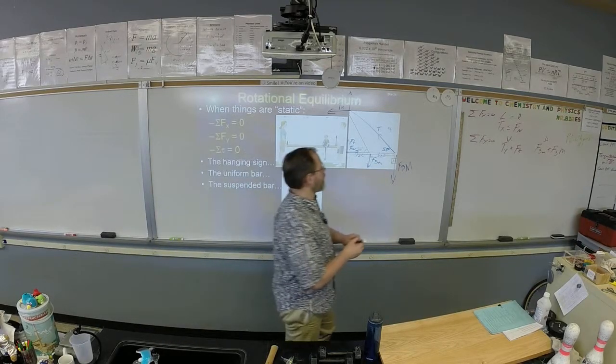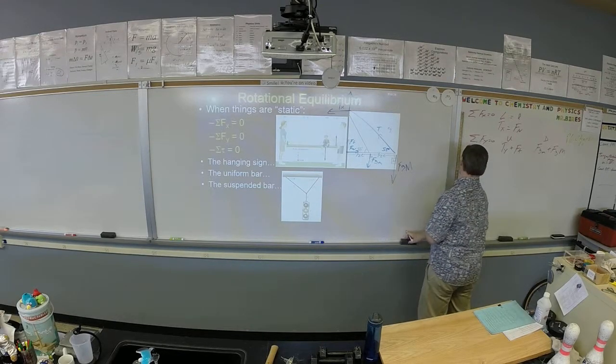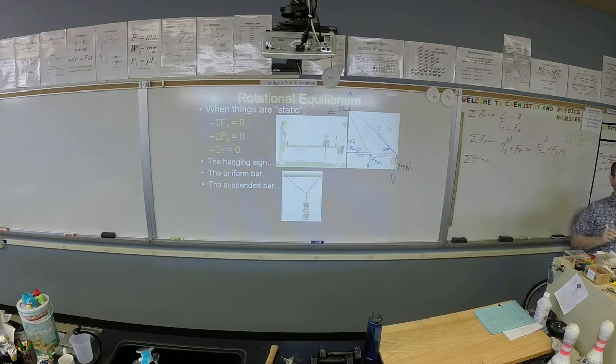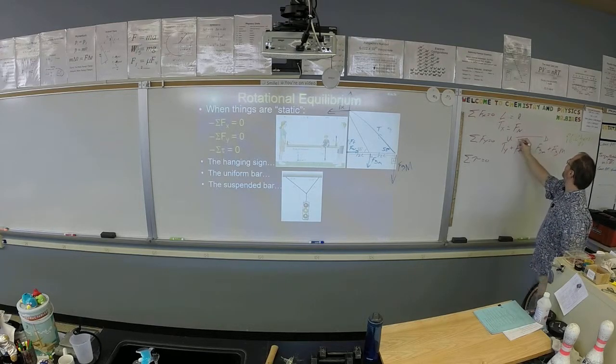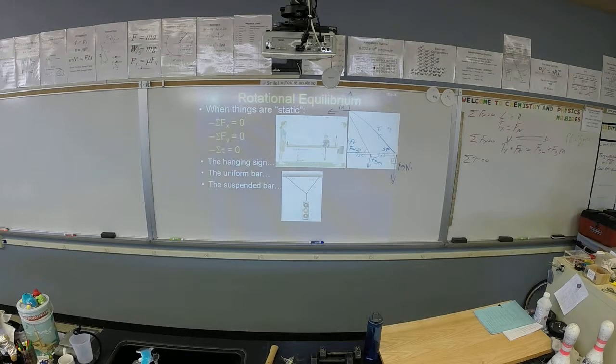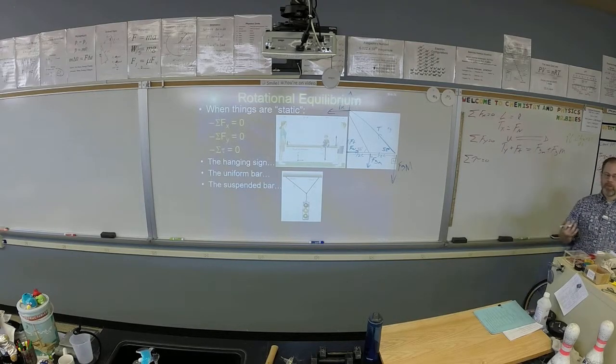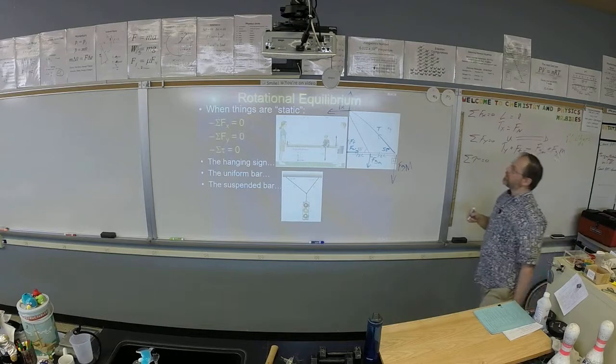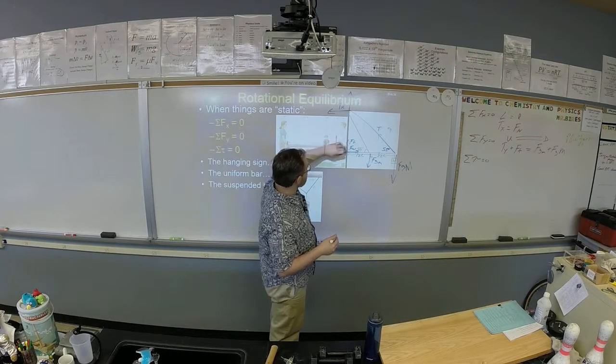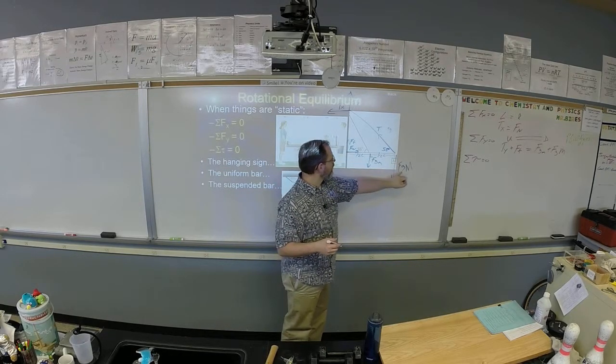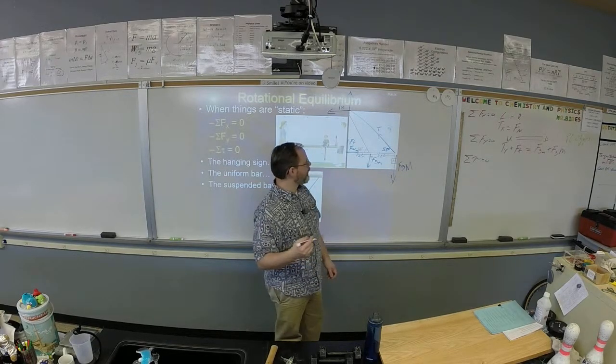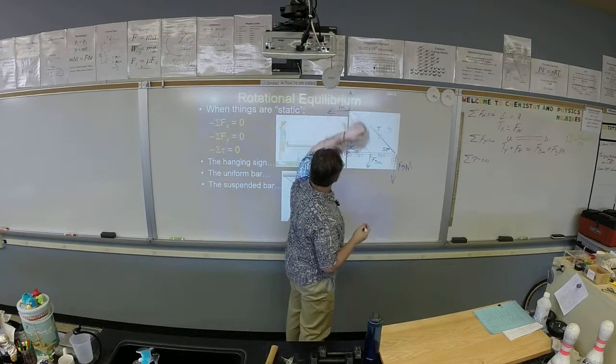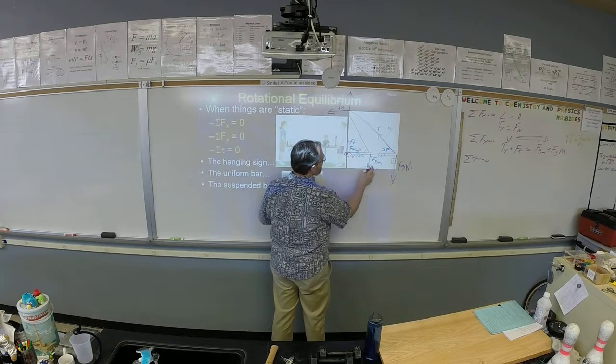So now we need some torque. The third condition for equilibrium is that all the torques are going to cancel out. Now we need to pick a pivot point and set all the clockwise to all the counterclockwise. And this is where things get a little weird. What did I say about the pivot point? Anywhere. Anywhere there's forces. You can put it at the wall so you can ignore these torques, or you can put it at the bar so you can ignore this torque. Where do you want to put the pivot point? Put it at the wall. We'll put it at the wall.